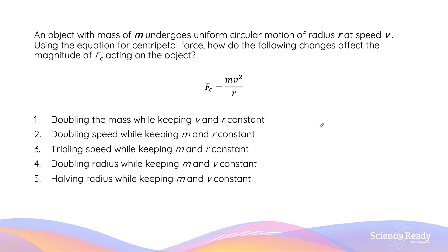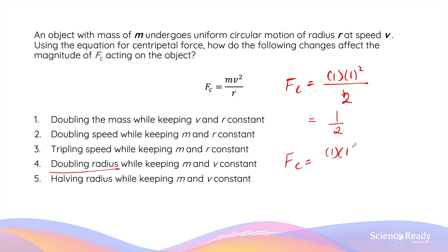Now let's look at the effect of changing radius. If we double the radius, substituting 1 for mass and velocity and 2 for radius gives a factor of one half — the centripetal force should be half as strong. If we halve the radius, substituting a half in the denominator gives a factor of 2, so the centripetal force should be twice as large to maintain circular motion with half the radius.